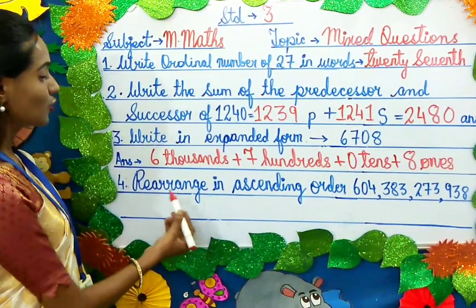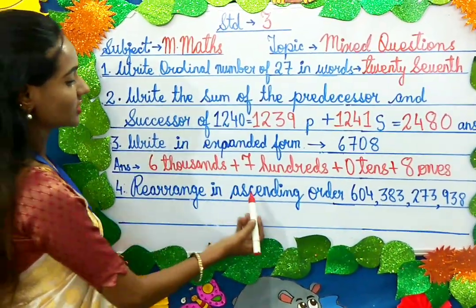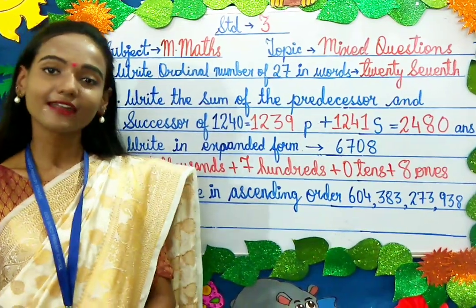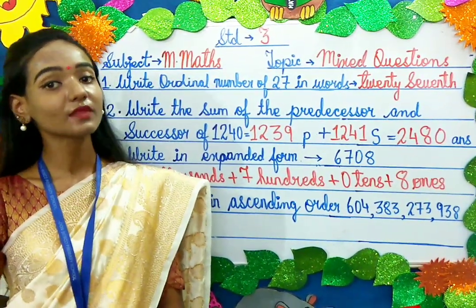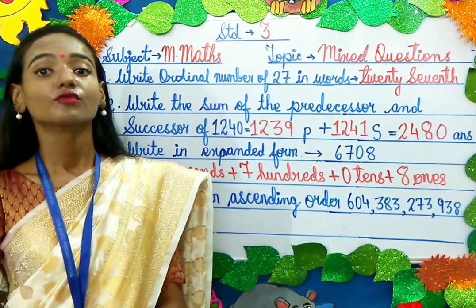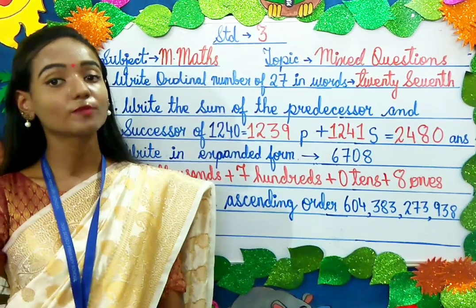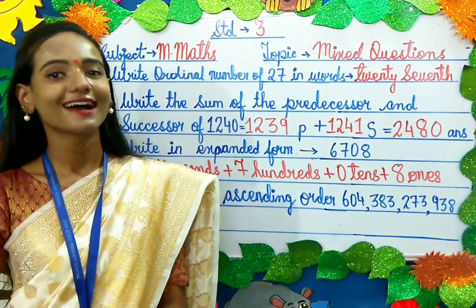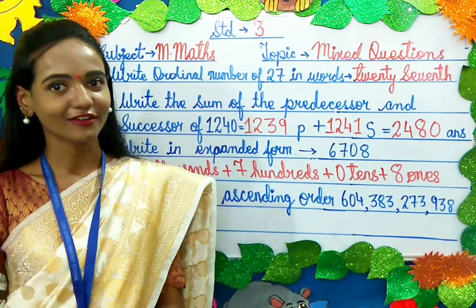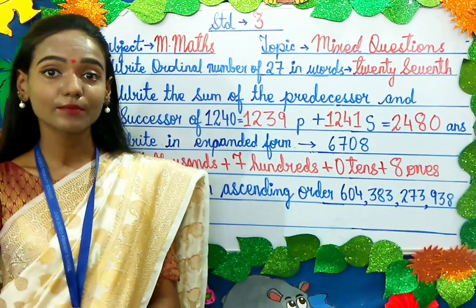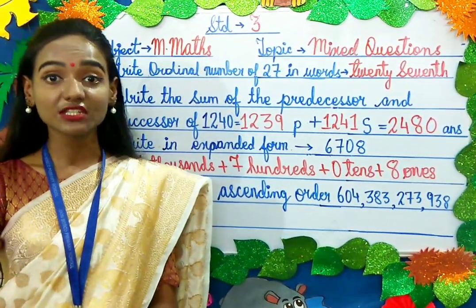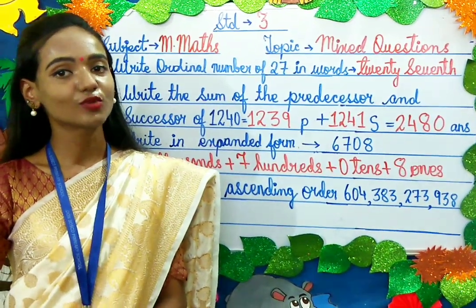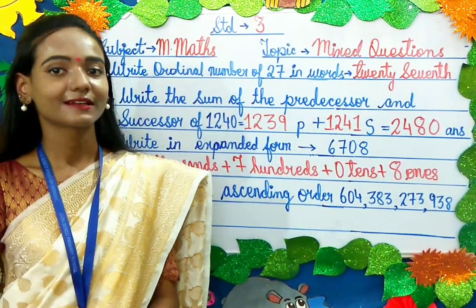Moving on to the last question. Rearrange in ascending order. What is ascending order and descending order? When we arrange numbers from the smallest number to the largest number, it is said to be ascending order. When we write numbers from the largest number to the smallest number, it is said to be descending order.